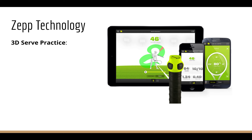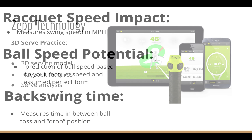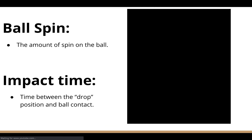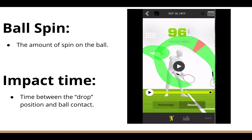The ZEP technology gives me the data needed to improve Travis's serve. The 3D serving model shows a playback of the serve, which includes racket motion. The serve analysis includes racket speed impact, which is basically ball speed, and ball speed potential, which is a prediction of ball speed based on assumed perfect serve mechanics. The backswing time measures the time between the ball toss and the drop position, ball spin, and the impact time is the time between the drop position and actual ball contact.